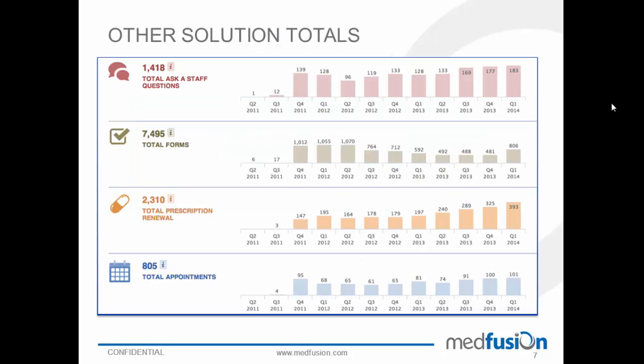Finally, the dashboard shows the other solution totals offered in the patient portal. These include total ask a staff questions asked by patients, total forms completed by patients — partial forms are not included — total prescription renewal requests, and total appointment requests made by patients. The bars on the right-hand side of the report can be filtered to look at quarters, months, weeks, and days. In this case it's showing quarters, and the totals on the left represent the totals for all 12 quarters.